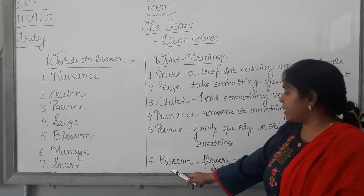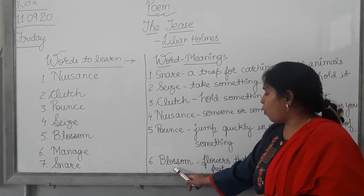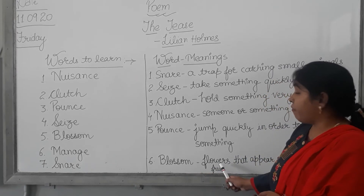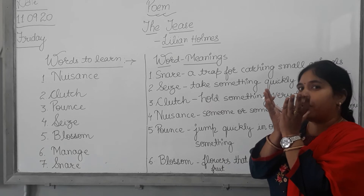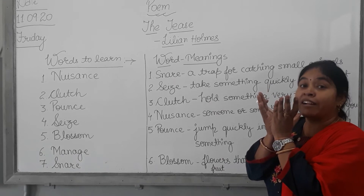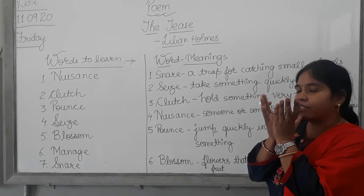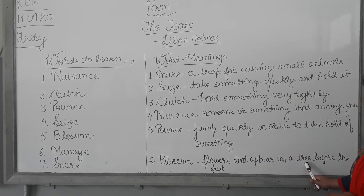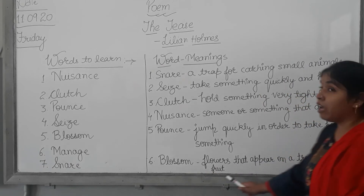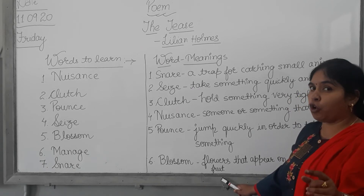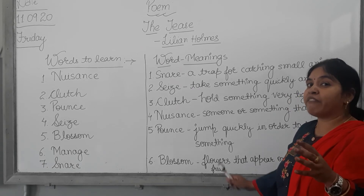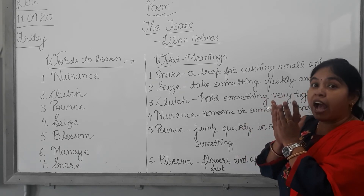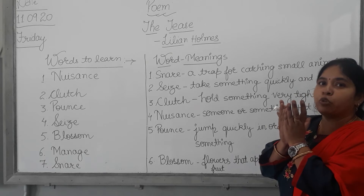And the last word is B-L-O-S-S-O-M, blossom. You have seen flowers of different colors in a garden. Blossom refers to the flowers that appear on a tree before the fruit. When there is no fruit on the tree yet and the flower appears — that is the blossom.